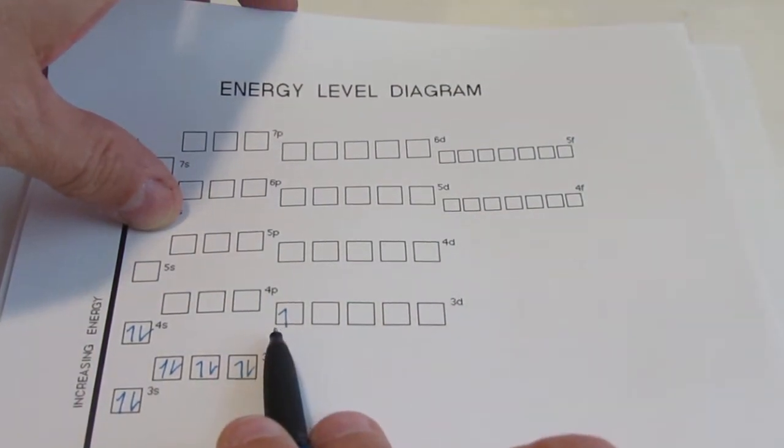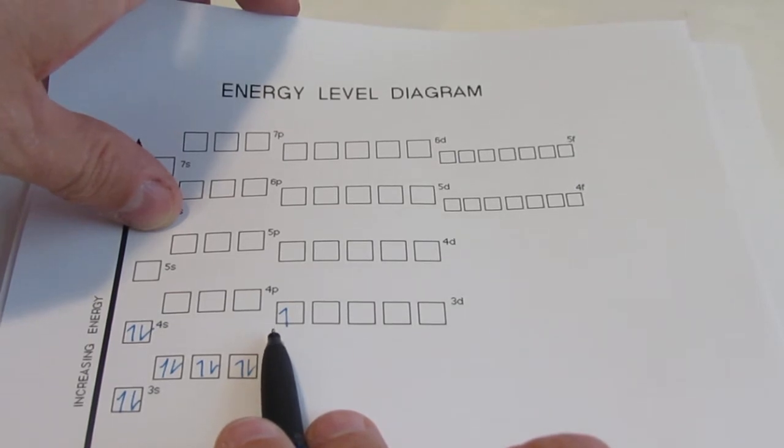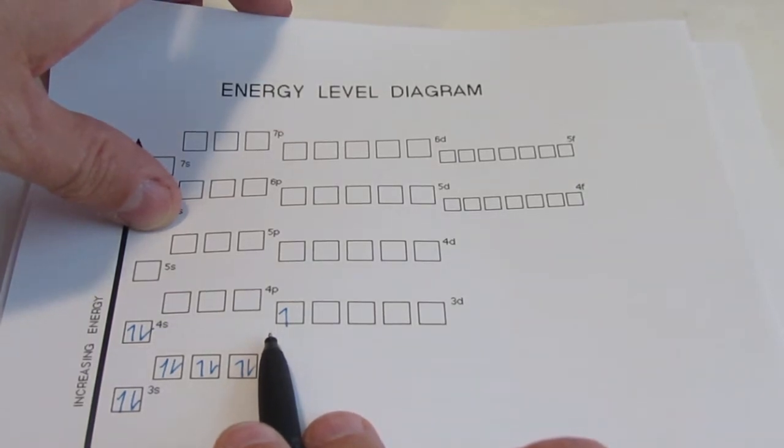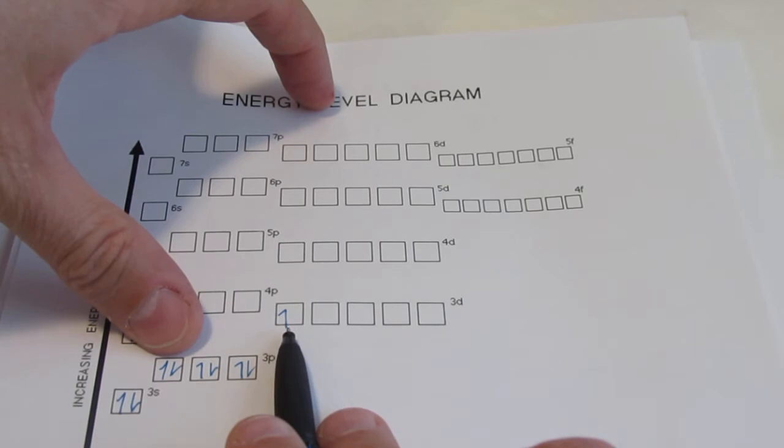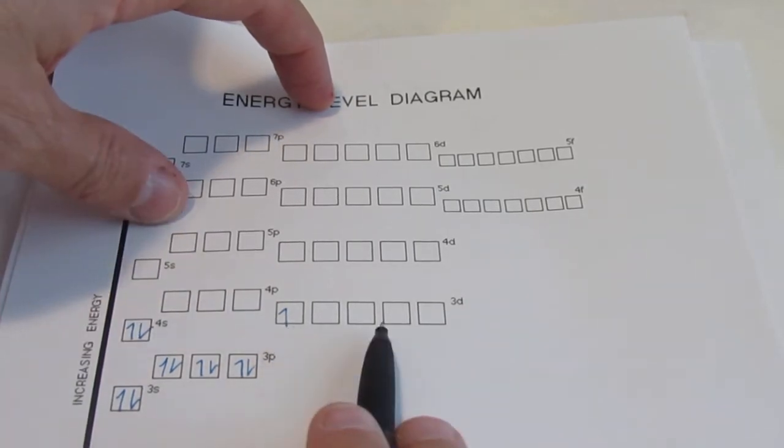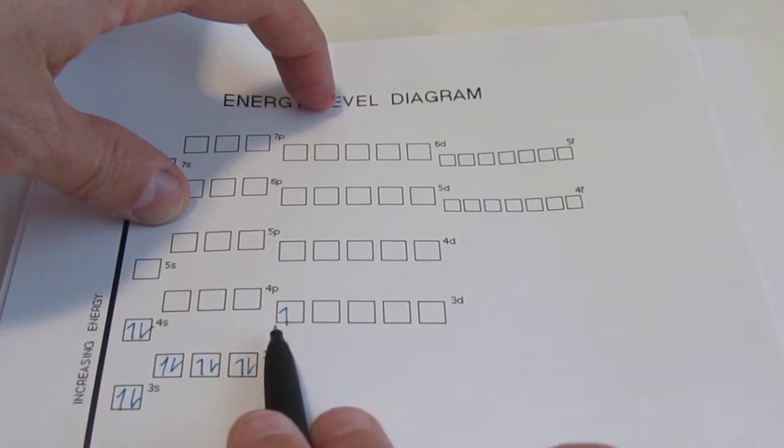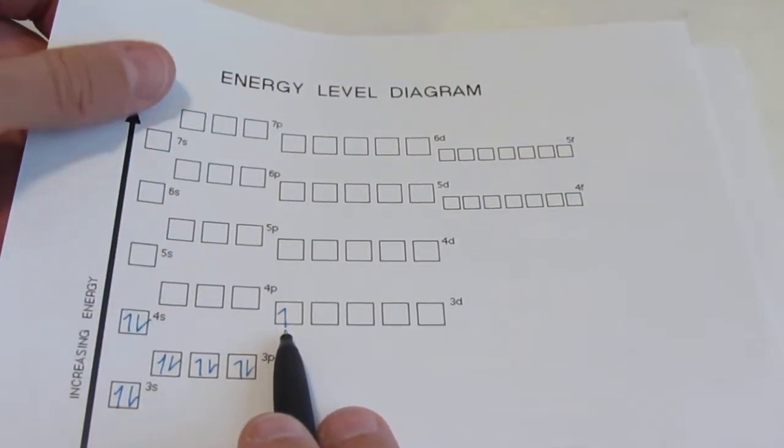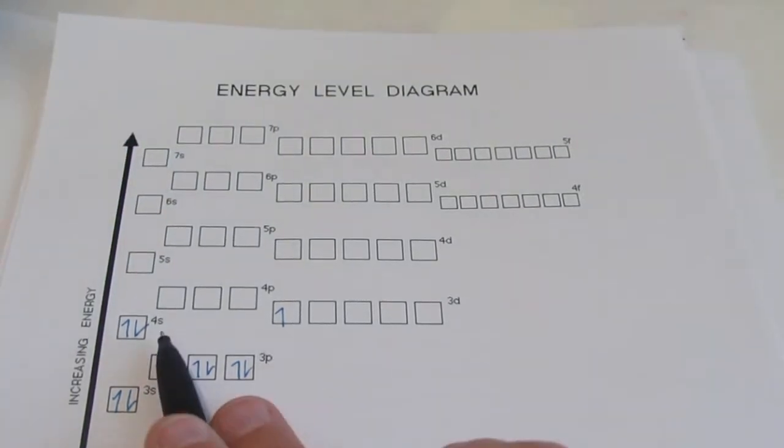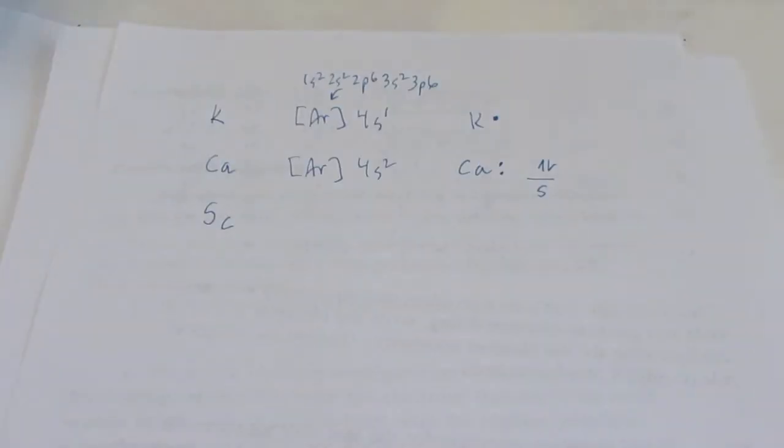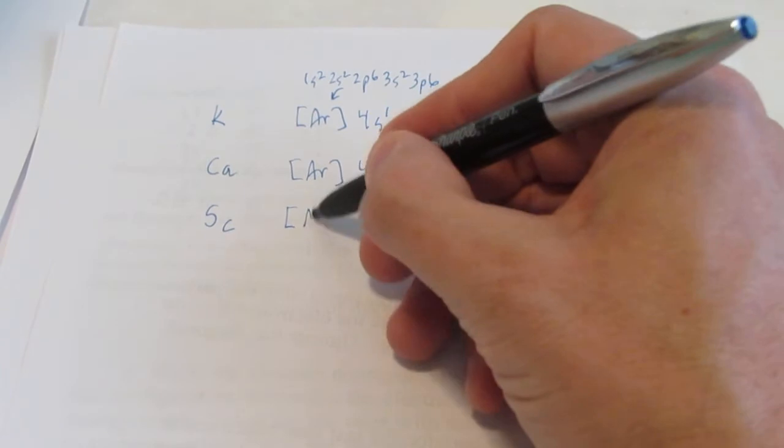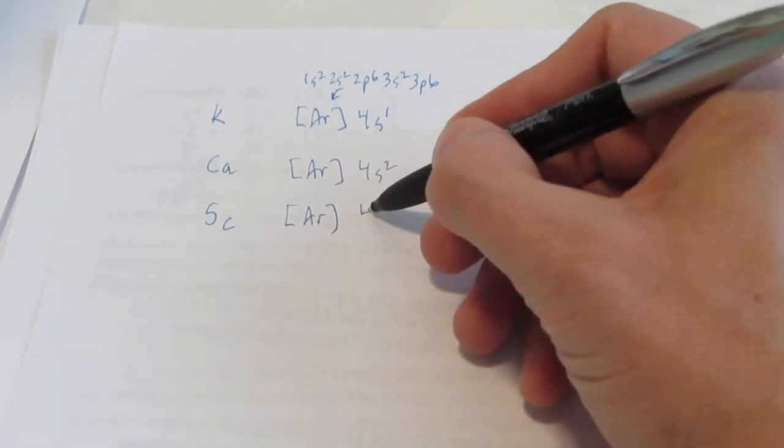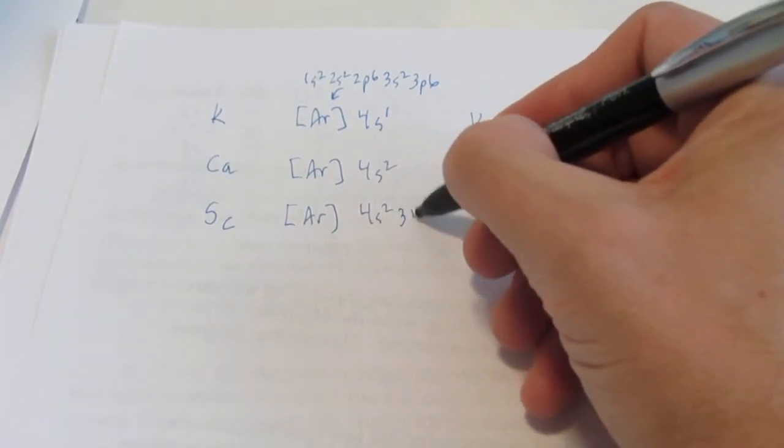We really don't know which one, whether it's the X squared minus Y squared. We don't know if it's the XY, the XZ, the YZ, etc. We just know it's going to take one of those five. They all have equal energy for right now. So we're going to put it right there. So its configuration ends with 4S2, 3D1. So the noble gas before it is still argon. But we go 4S2, 3D1.